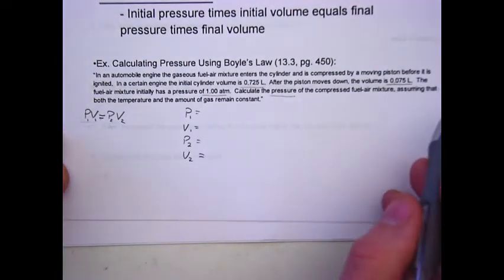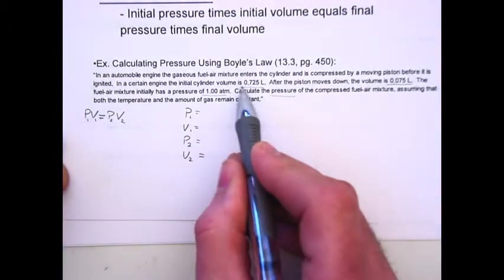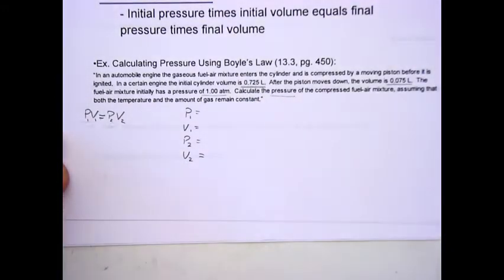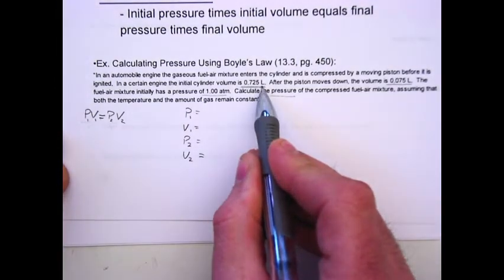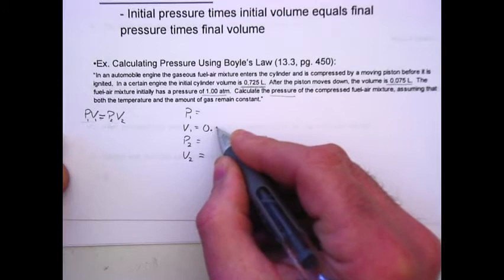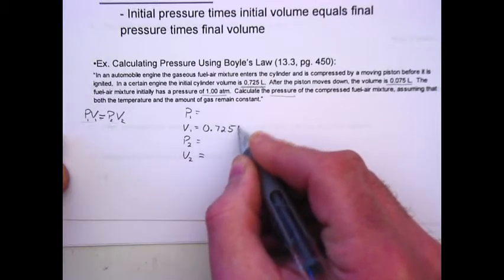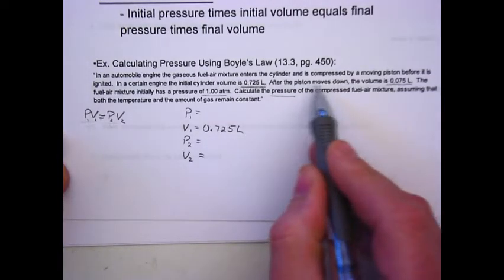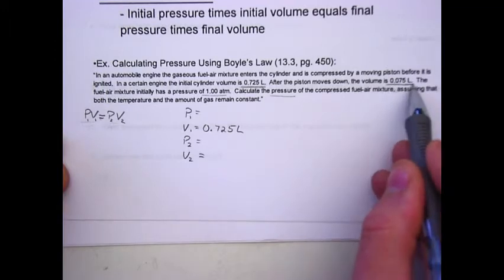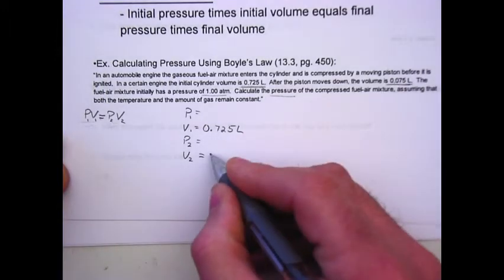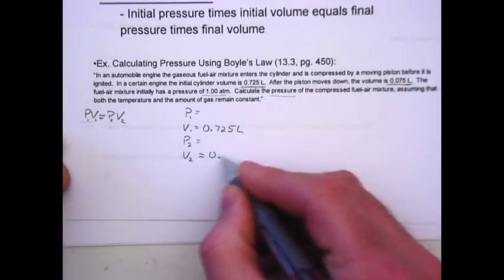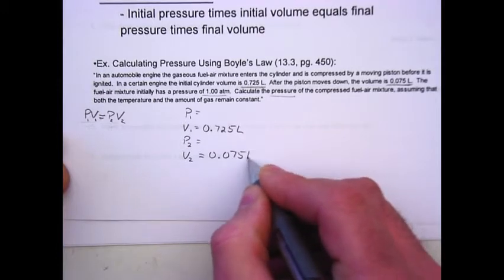So, as we go through and re-read, we have 0.725 liters. Since liters is a unit of volume, we're going to put that down as our initial volume. As we read down with volumes written again, that's going to be V2, that's 0.075 liters.